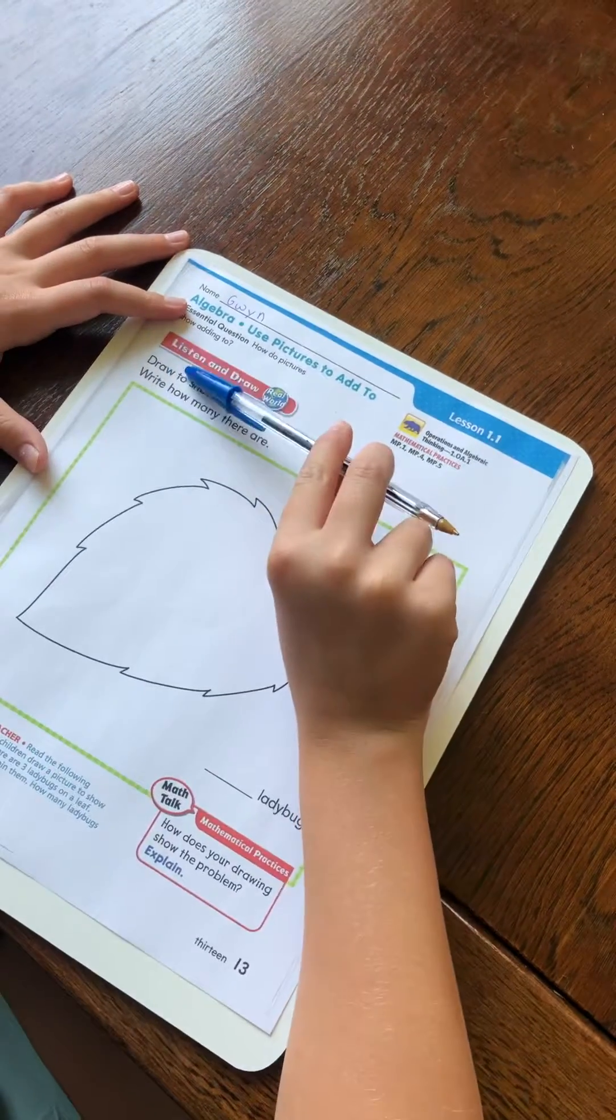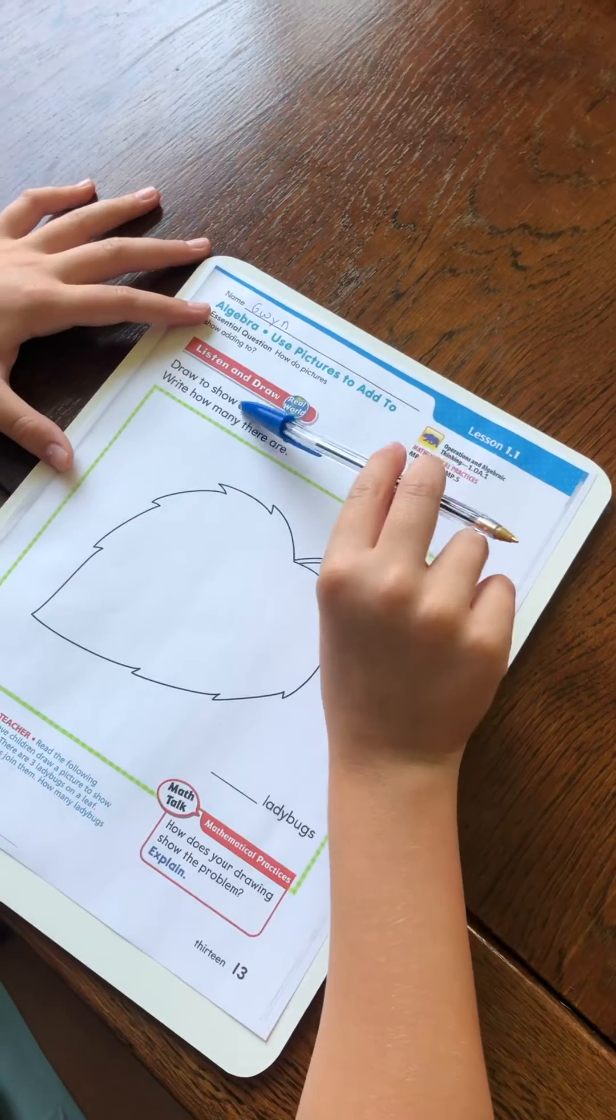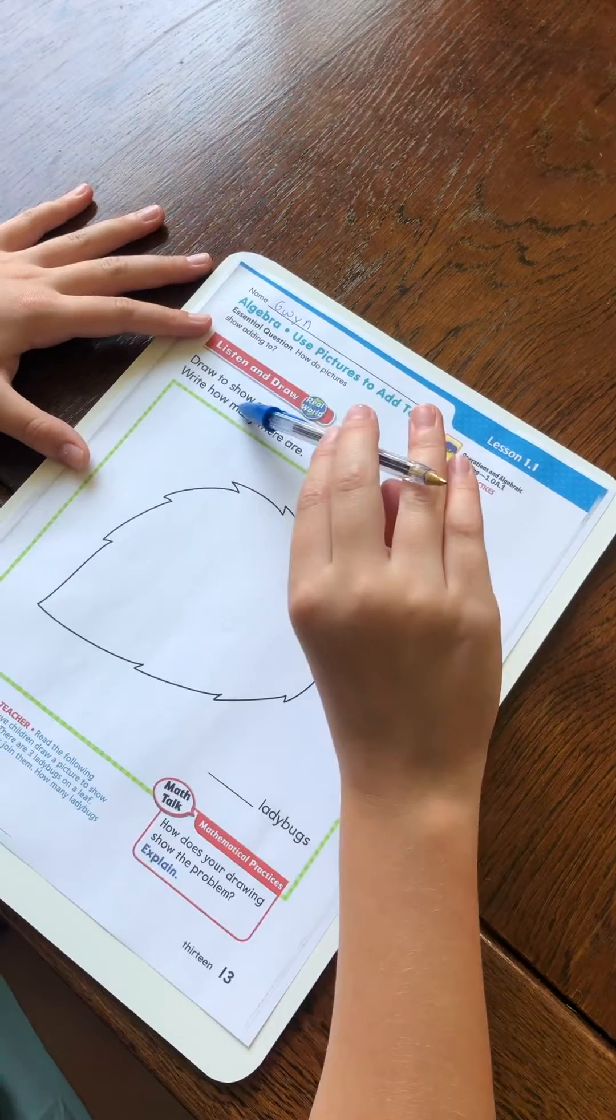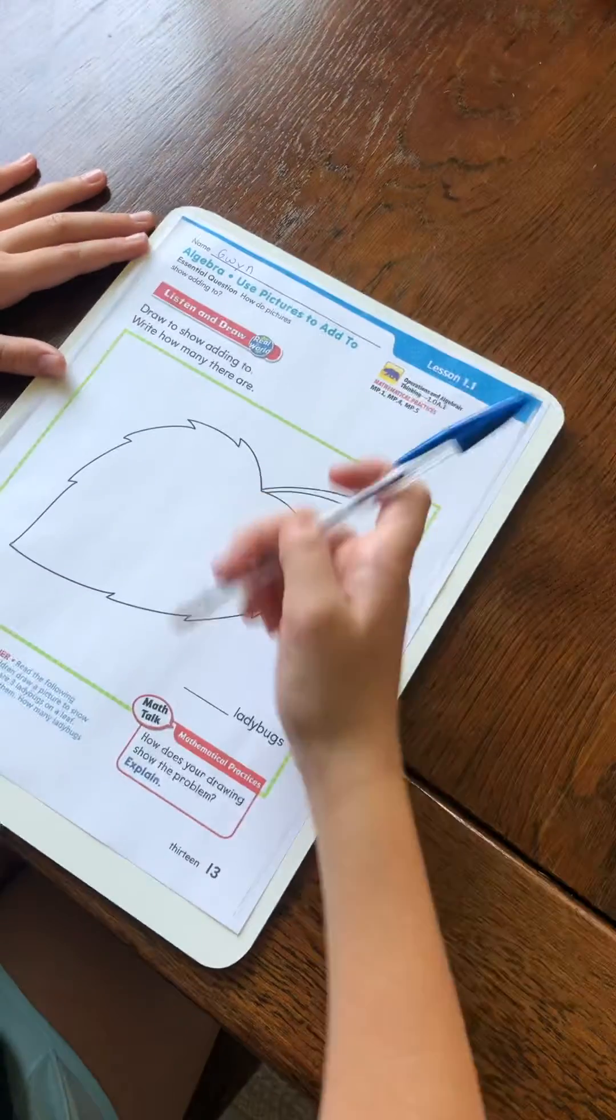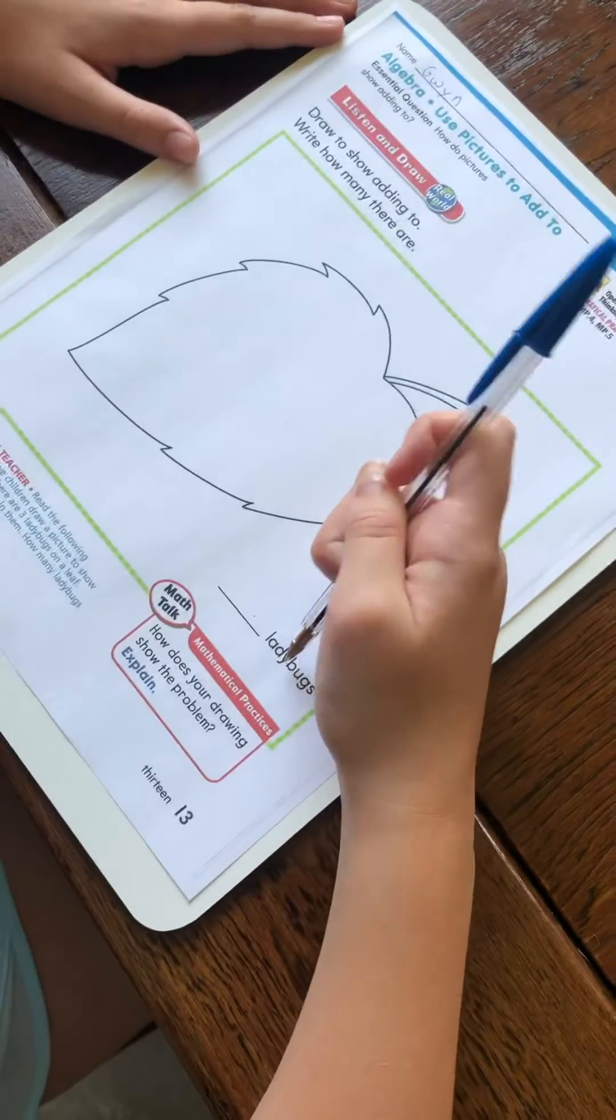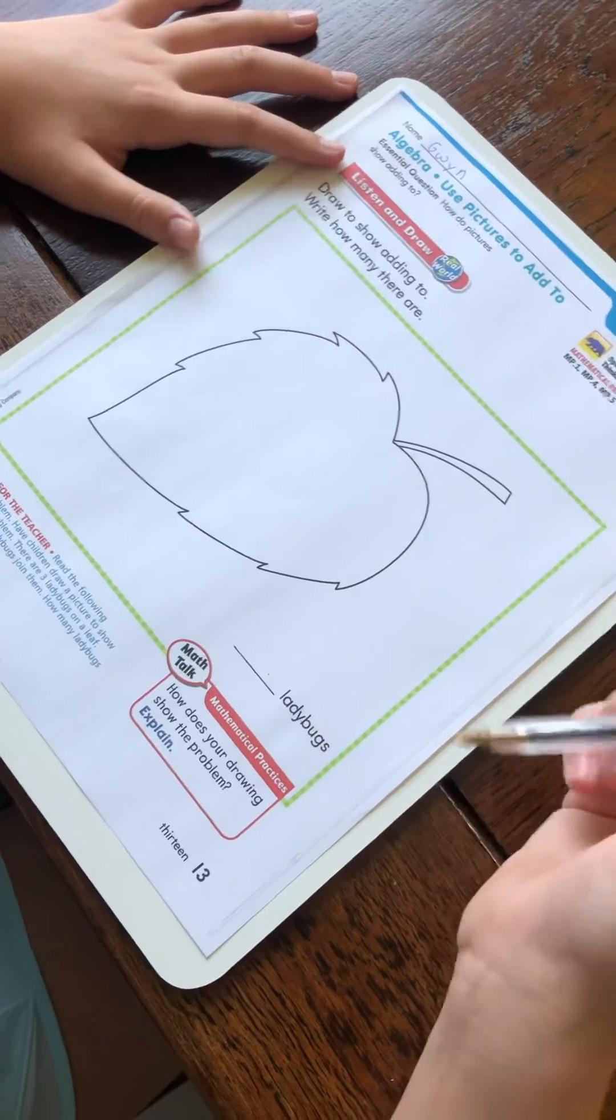The directions say, draw to show adding to write how many there are. So right here it says blank ladybugs. Whatever I have to do, I know it has to do with ladybugs.